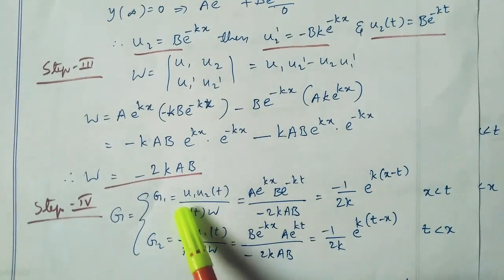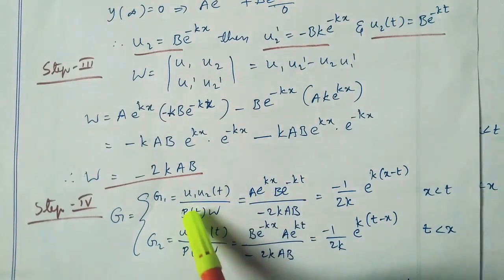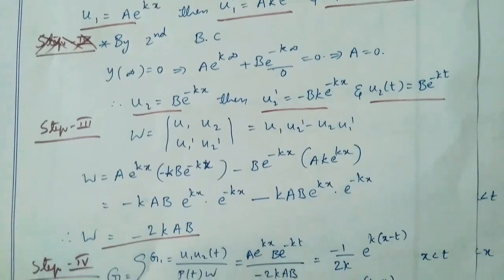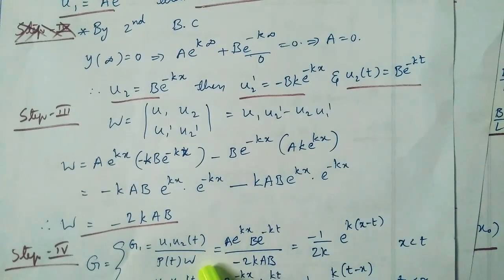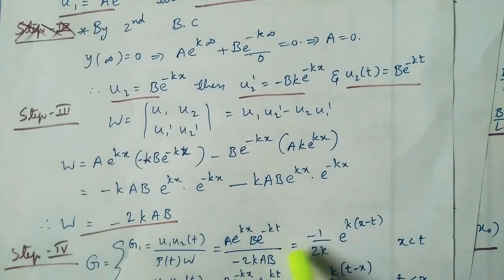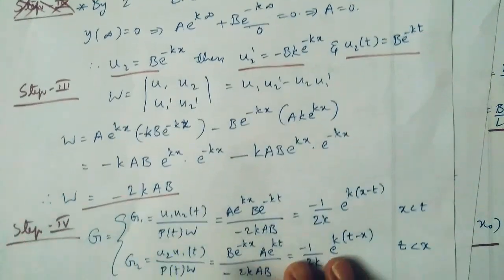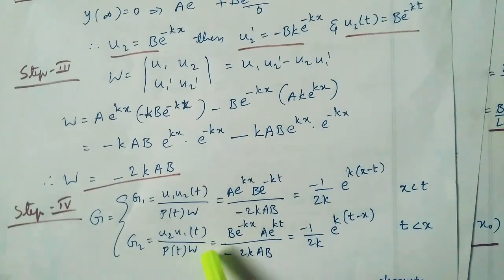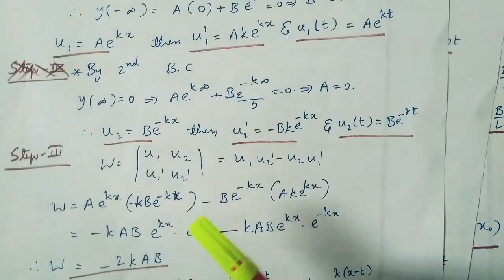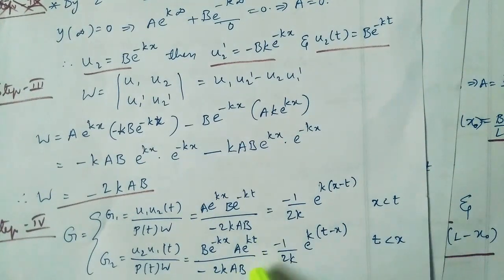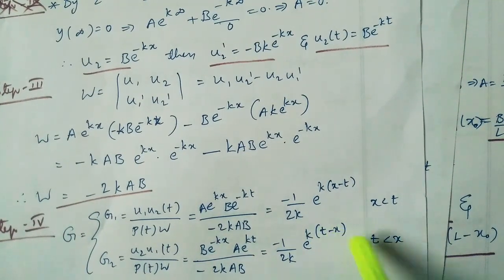Step 4: Green's function g1 equal to u1·u2(t) divided by p(t)·W. This equals a·e^(kx) into b·e^(-kt), divided by 1 into minus 2kab. Ab cancels, giving g1 equal to minus 1/(2k)·e^(k(x-t)) for x less than t. And g2 equal to u2·u1(t) divided by p(t)·W, which equals b·e^(-kx) into a·e^(kt) divided by minus 2kab, giving g2 equal to minus 1/(2k)·e^(k(t-x)) for t less than x.